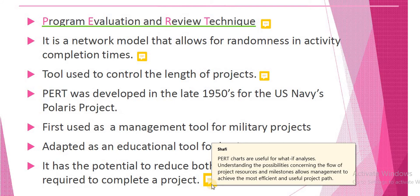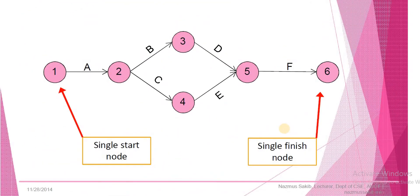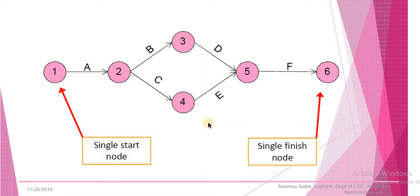So now let's look at an example of what a PERT chart looks like. A PERT chart is a series of nodes and arrows. There are two different types: activity on node and activity on arrow. This example shown here is the activity on arrow figure. The total project has a single start node and a single end node.